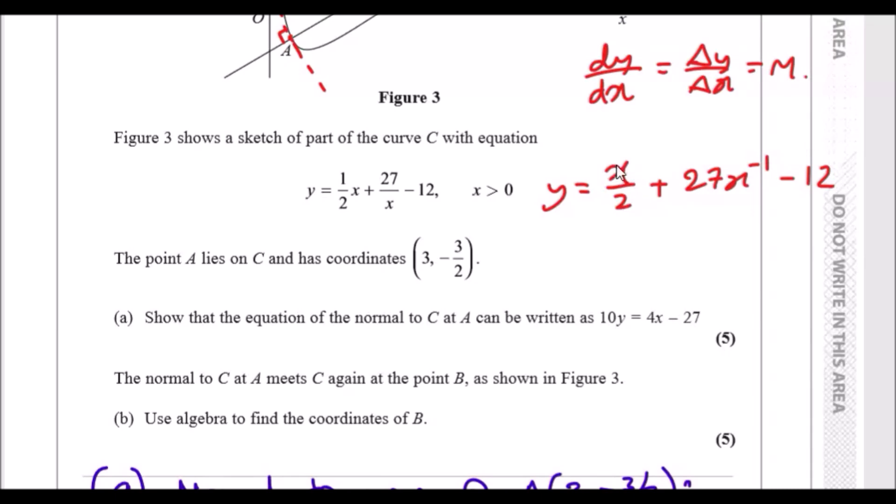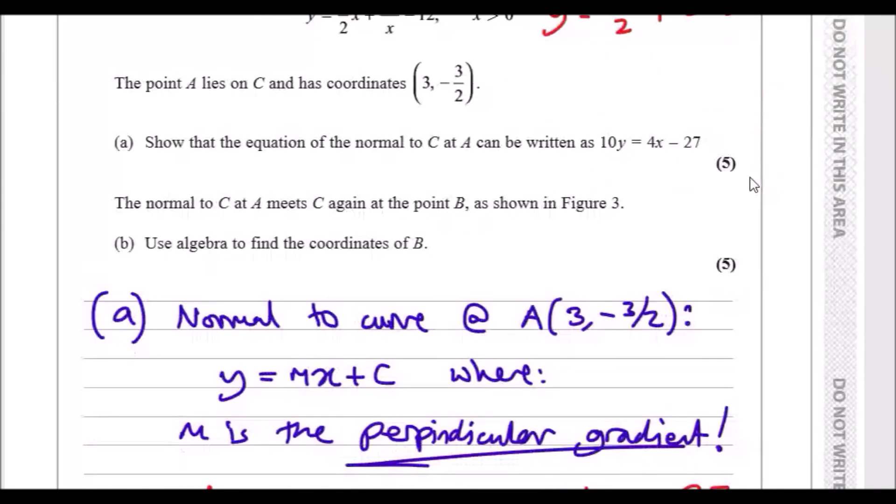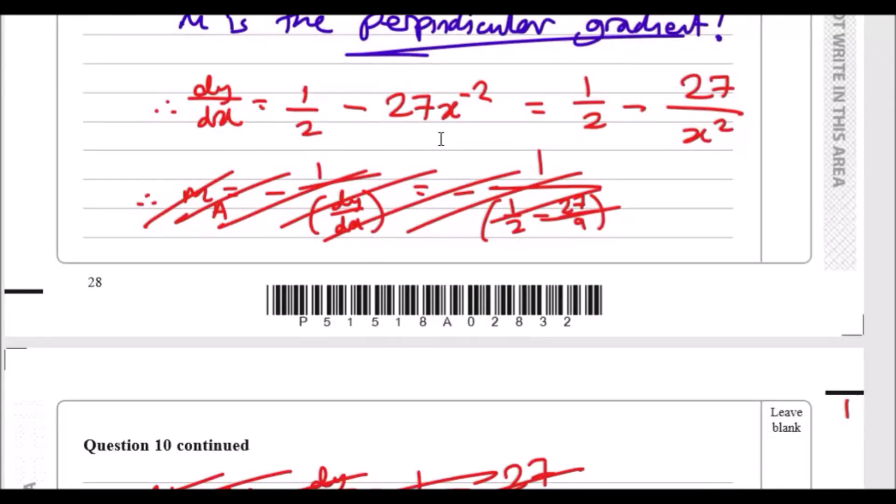When you differentiate this one, the x vanishes so it's 1 over 2, and then this one you drop the power down, so it'll be minus 27x and this goes down to negative 2. You can rewrite this as 1/2 minus 27 over x squared, and that's your dy/dx.